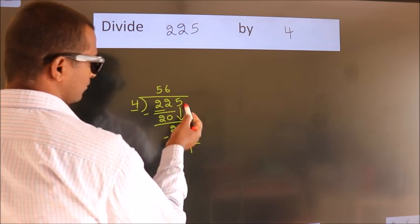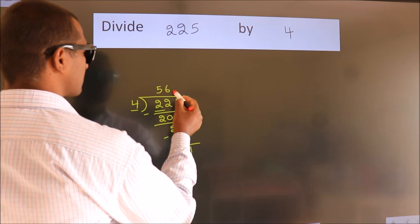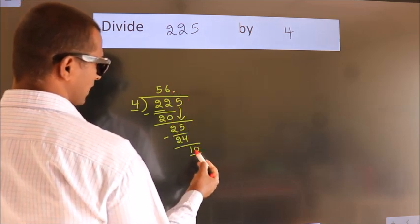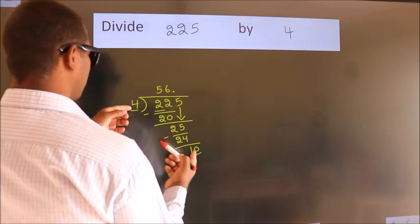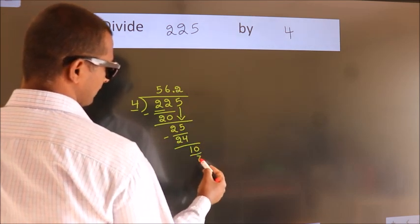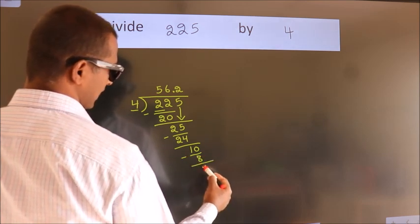After this, no more numbers to bring down. So what we do is we put a dot and take 0, giving us 10. A number close to 10 in the 4 table is 4 times 2 equals 8. Now we subtract and we get 2.